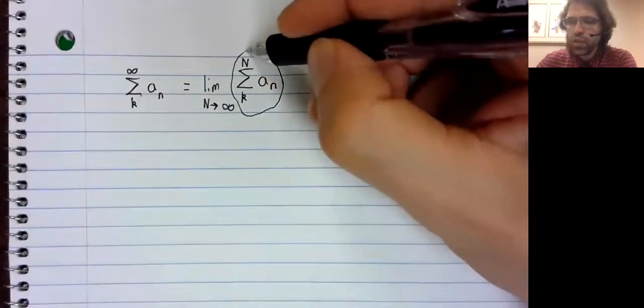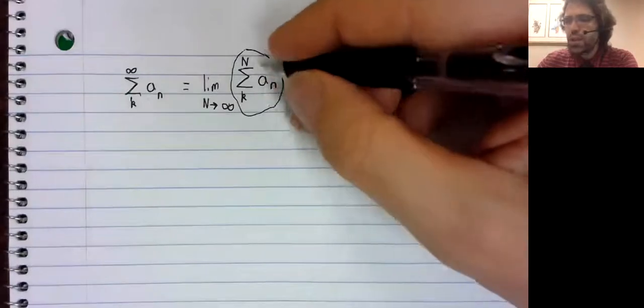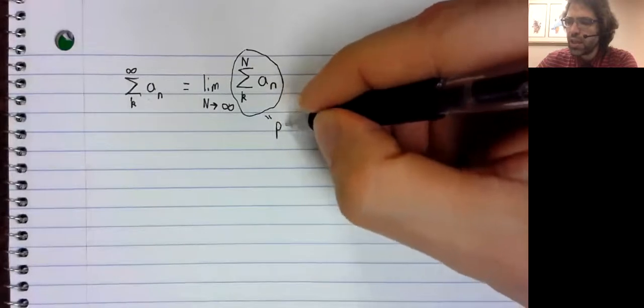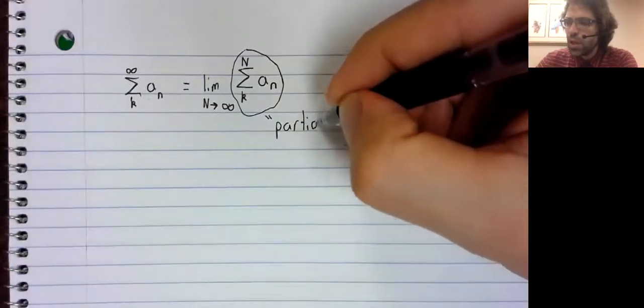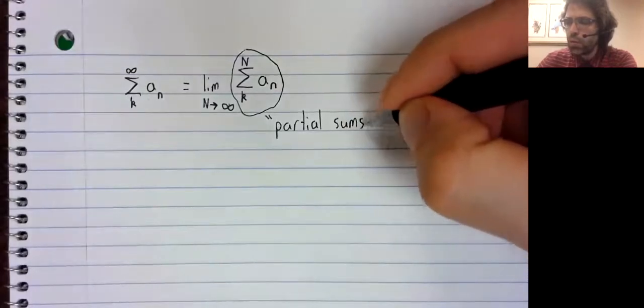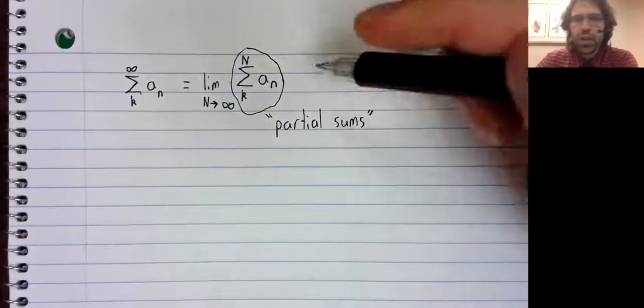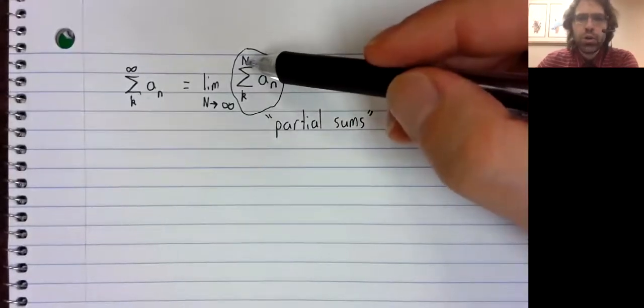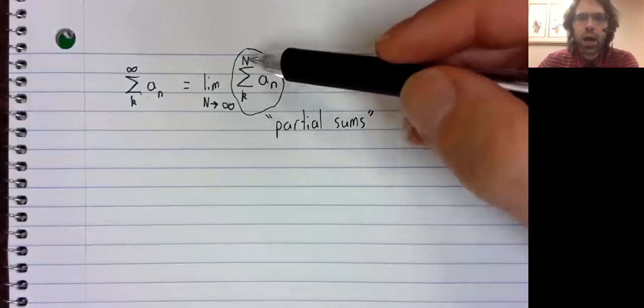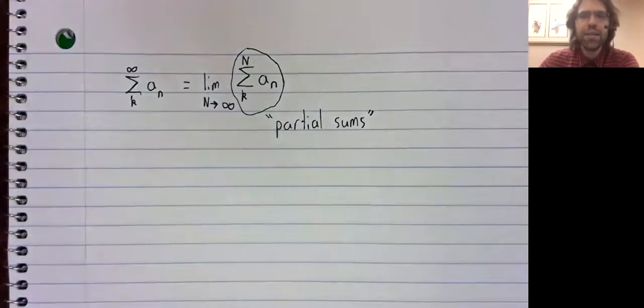A bit of terminology. These sums whose limits we're taking are called partial sums. Because they're not going all the way up to infinity here, you're only going part of the way. So an infinite series is the limit of partial sums.